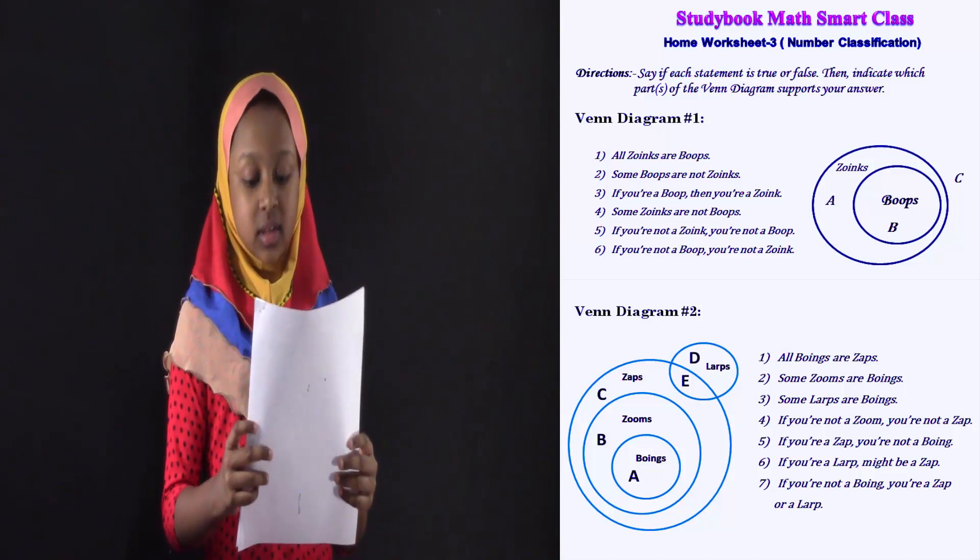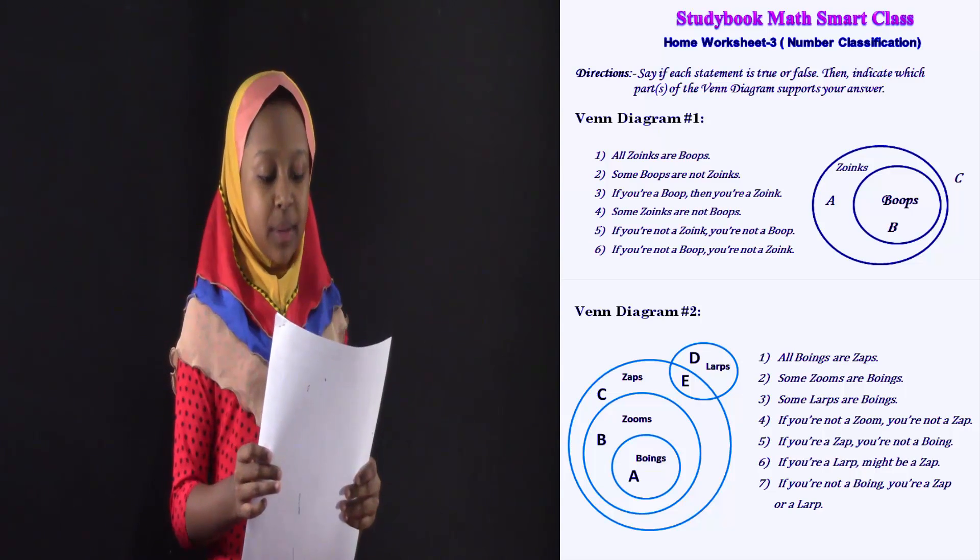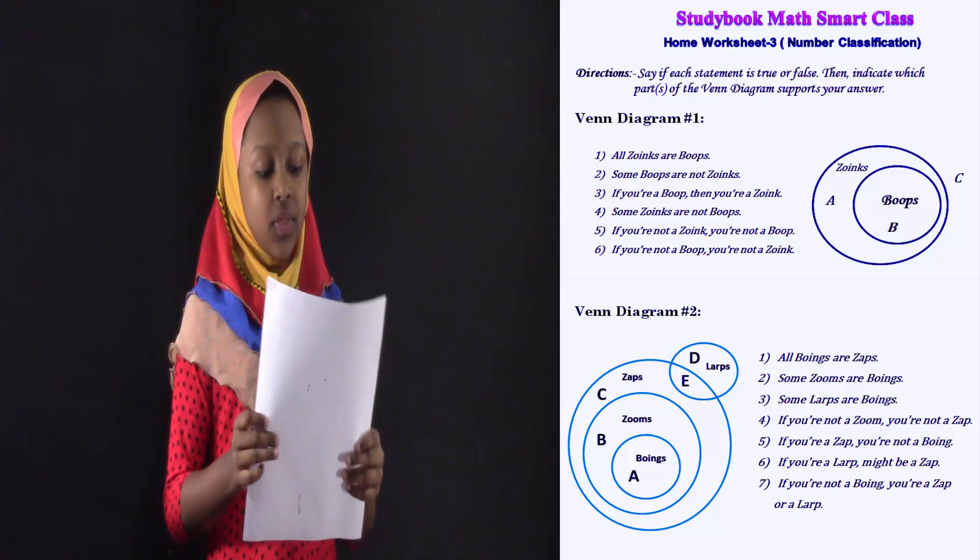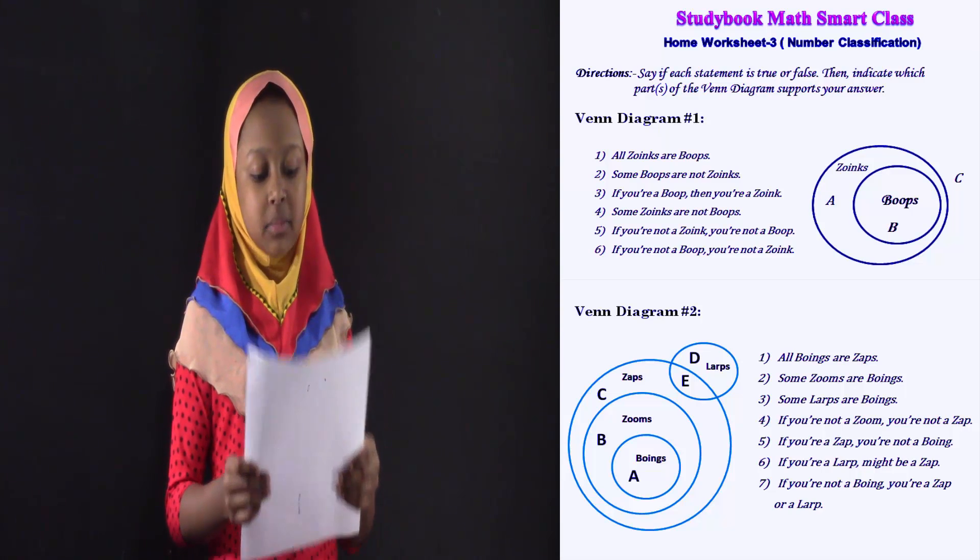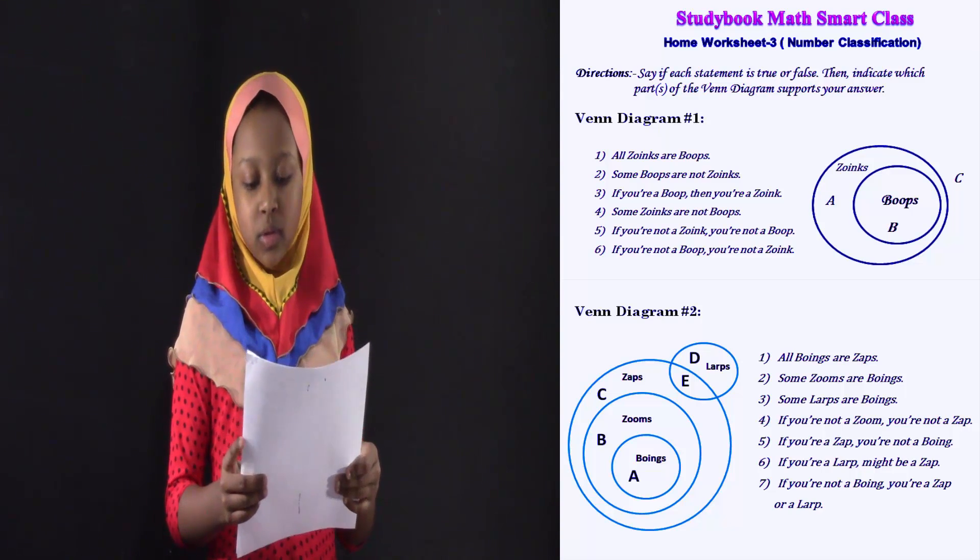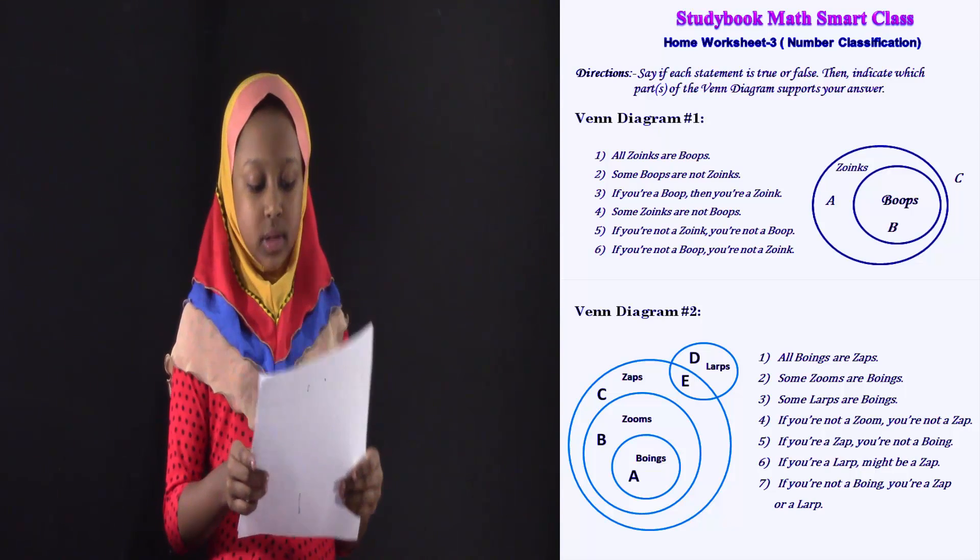So, the directions are: say if each statement is true or false, then indicate which parts of the Venn diagram supports your answer. The first one for Venn diagram is all zoinks are boobs.